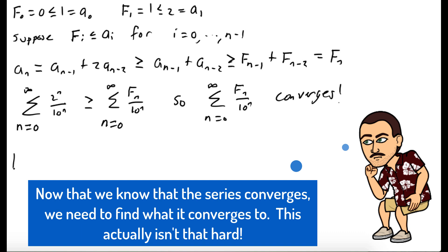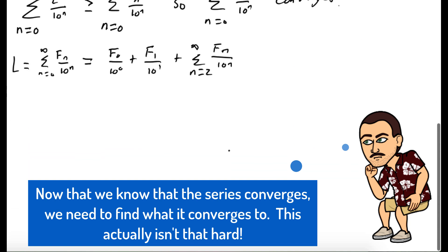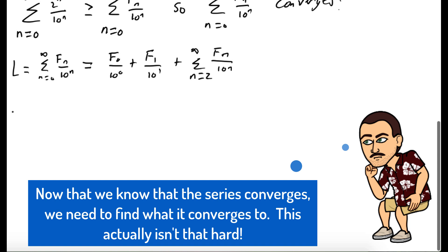We call what it converges to L, so L equals the sum from n equals 0 to infinity of fₙ over 10 to the n. Our goal is to use the Fibonacci recurrence, so let's pull out the first two terms: f₀ over 10 to the 0 plus f₁ over 10 to the 1 plus the sum from n equals 2 to infinity of fₙ over 10 to the n. Since f₀ is 0 we discard it, and f₁ is 1, giving us 1 tenth plus that remaining sum.